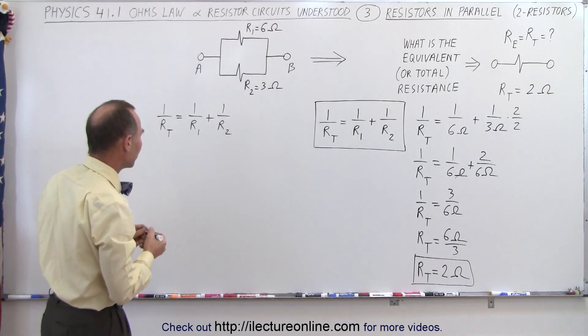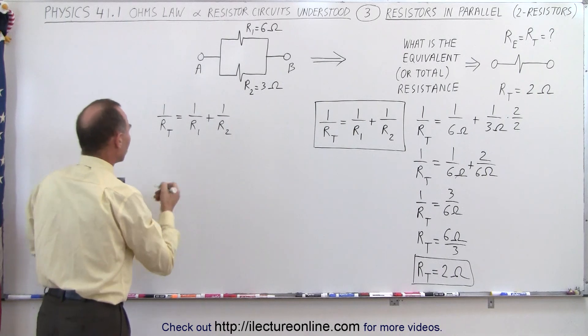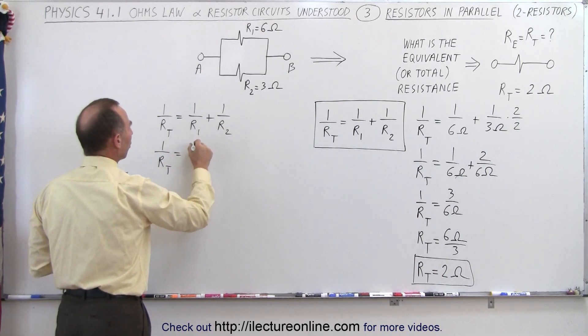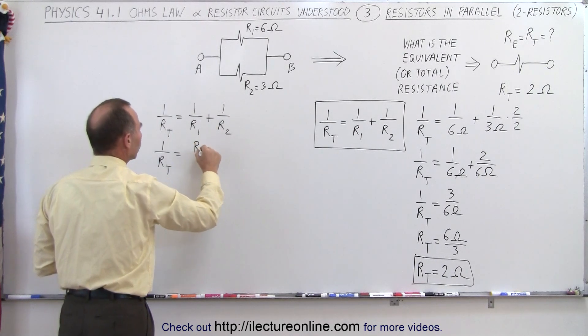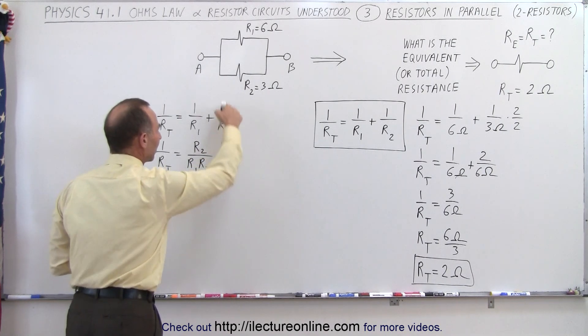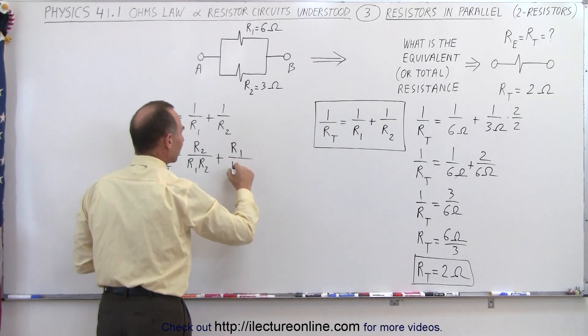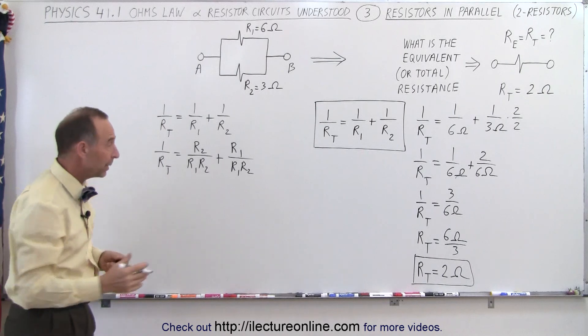Now let's take this equation right here and find the common denominator, which would end up being the product of these two. So we can write that 1 over R total is equal to 1. I'm going to multiply the top and the bottom by R2. So that's R2 divided by R1 times R2 plus, and I'm going to multiply the top and the bottom here by R1. So we get R1 divided by R1 times R2.